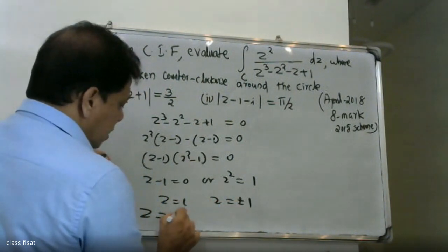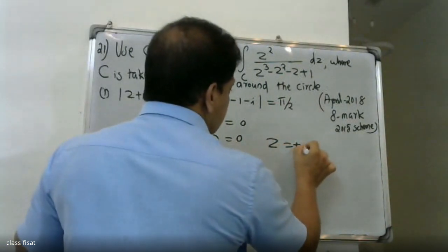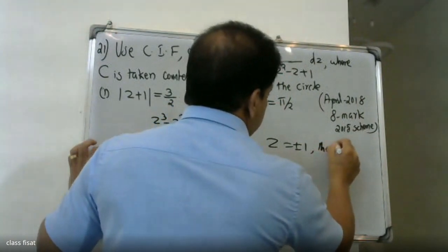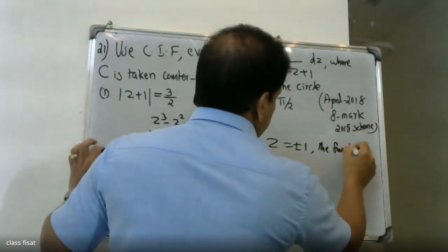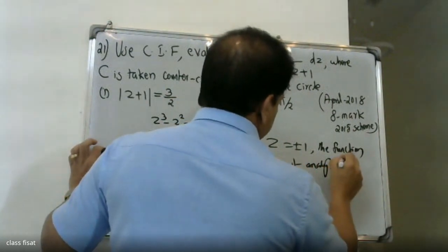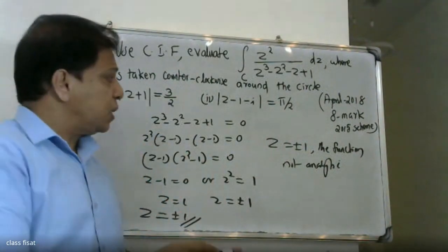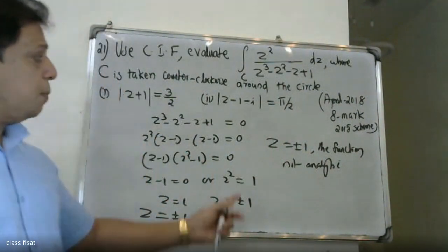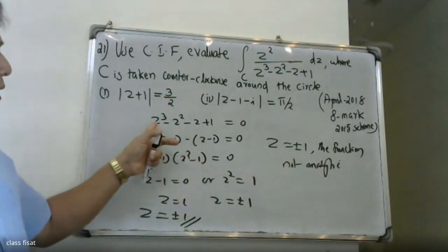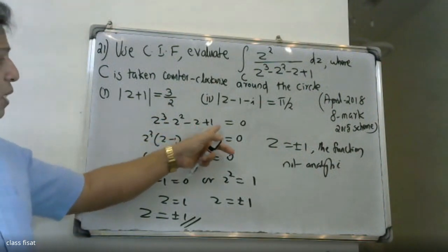Now z minus 1 equals 0 gives z equals 1, and z squared equals 1 gives z equals plus or minus 1. So the singular points are z equals plus or minus 1. Note this is a cubic equation: z cubed minus z squared minus z plus 1 equals 0.